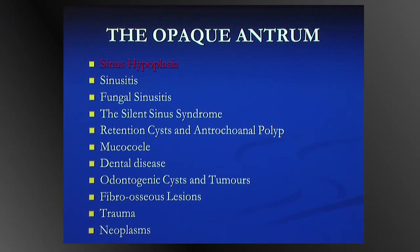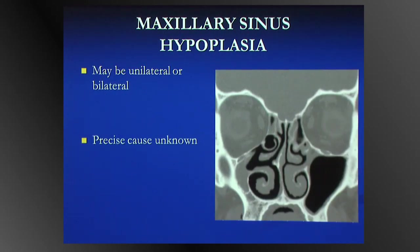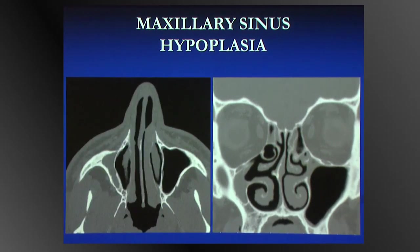The entities can be congenital or a much larger acquired group. As far as congenital, sinus hypoplasia can be unilateral or bilateral. The precise cause is uncertain; theories include failure of intrauterine development or infection in the first year of life. The appearance is usually the same: as the name suggests, it is a small antrum — the only opacified entity that presents with a small antrum.